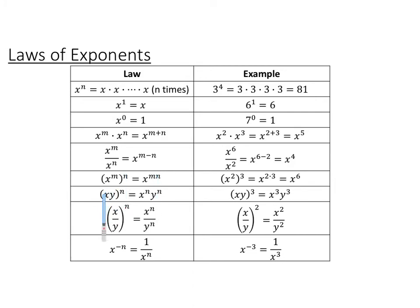If you are multiplying or dividing — not adding or subtracting — inside something being raised to a power, you can distribute that power to both parts of the product or quotient. If you have a negative exponent, that means it's a reciprocal: x to the negative n power is the same as 1 over x to the n. If the negative is in the denominator, it flips up to the numerator.